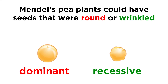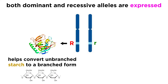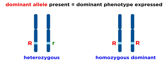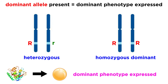For example, when Mendel examined seed shape, he noticed that seeds could be round or wrinkled, with round being dominant. We now know that this is because the dominant allele codes for an enzyme that helps convert unbranched starch into a branched form, while the recessive allele codes for a defective form of that enzyme, thereby allowing unbranched starch to accumulate, which causes water to enter the seed by osmosis. So if at least one dominant allele is present, in the form of the heterozygous or homozygous dominant genotypes, the correct enzyme will be produced and the seed will be round.